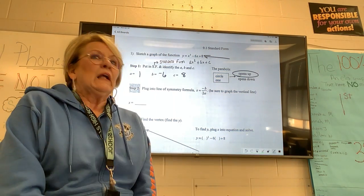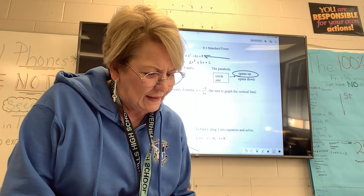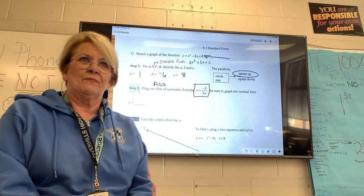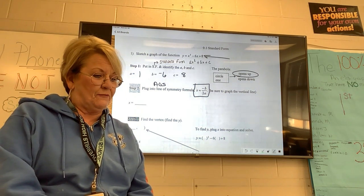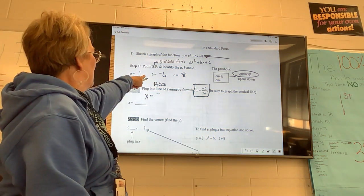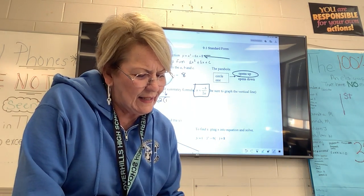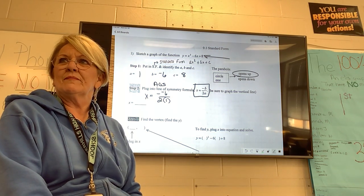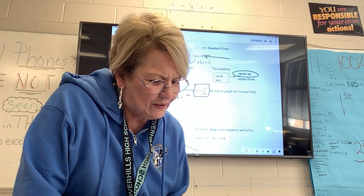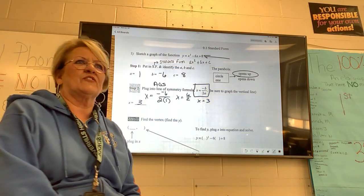Now it wants us to identify A, B, and C. Tell me what is A, what is B, and what is C for this equation. A is 1, B is negative 6, C is 8. That's important. Now based on the value of A, does my parabola smile or frown? It smiles — so it says here: is it opening up or opening down? Opening up. So this one opens up.